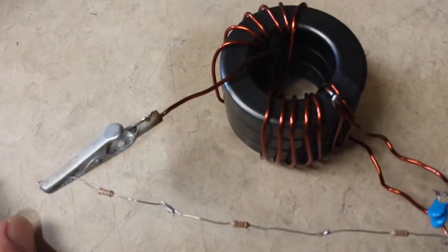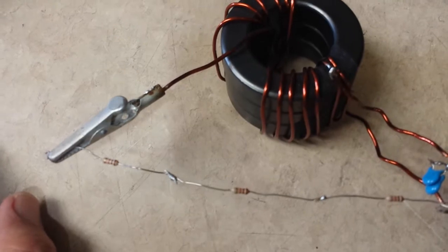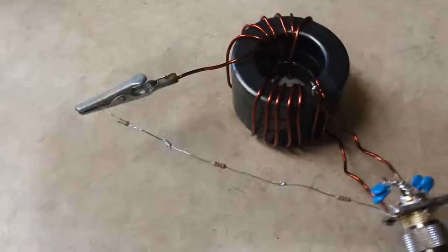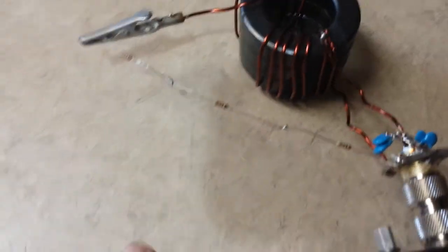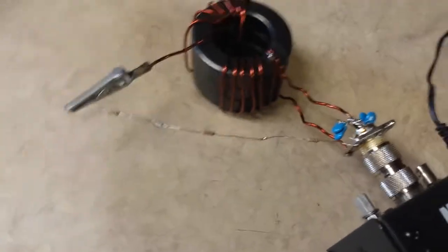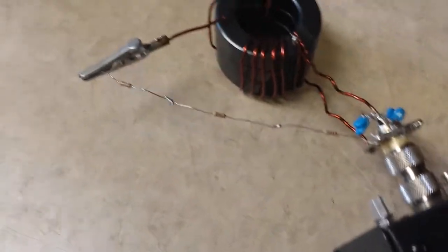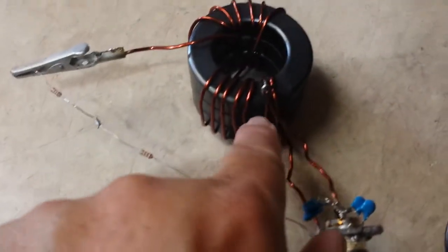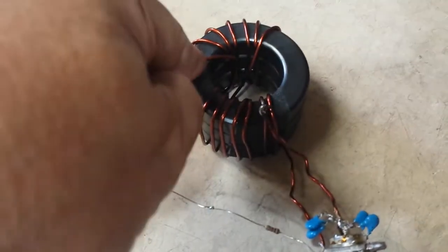Instead of using the twisted type primary, I'm using the tapped type that recently came out of a conversation on Facebook. But all it is is a total of 14 turns.